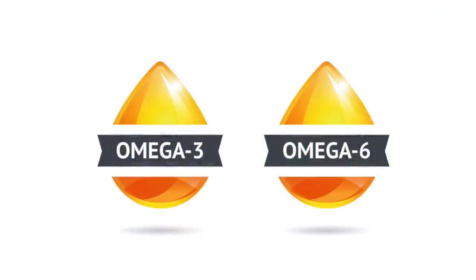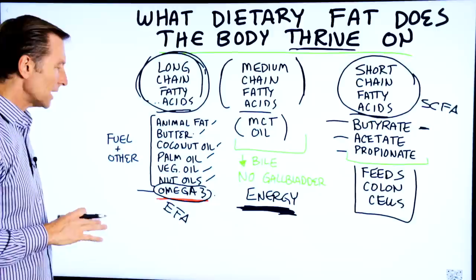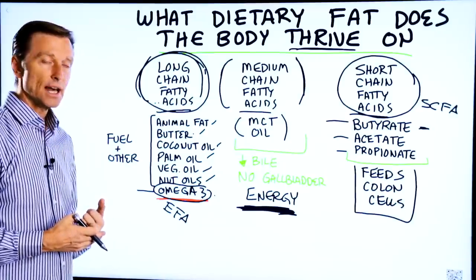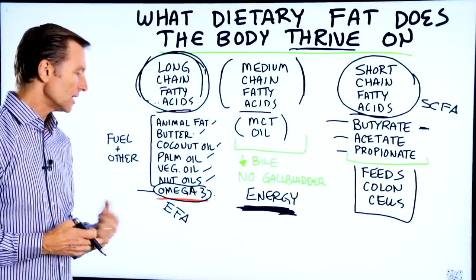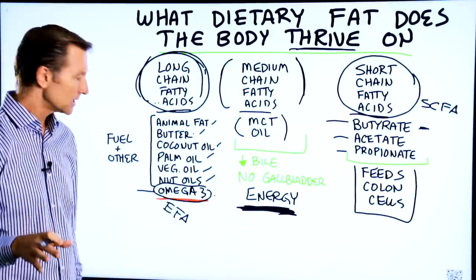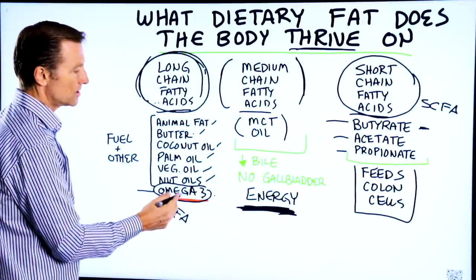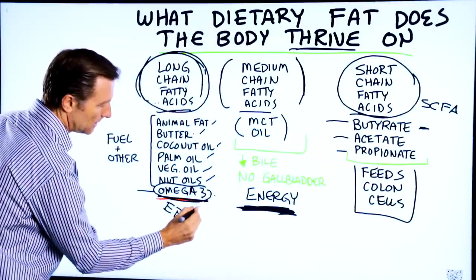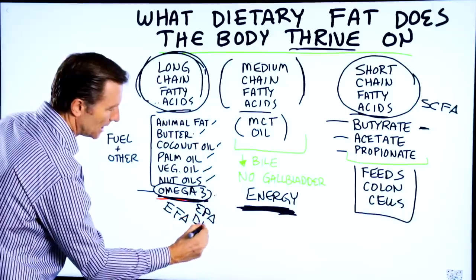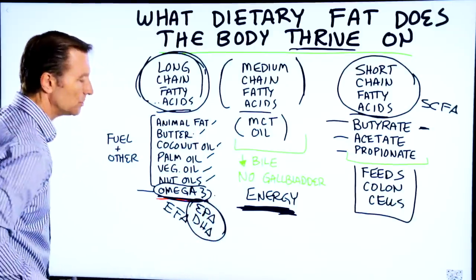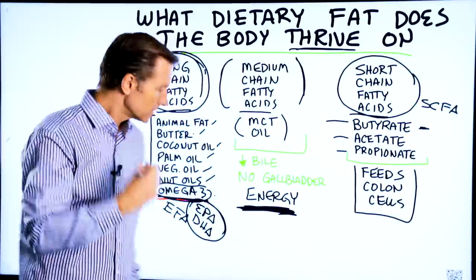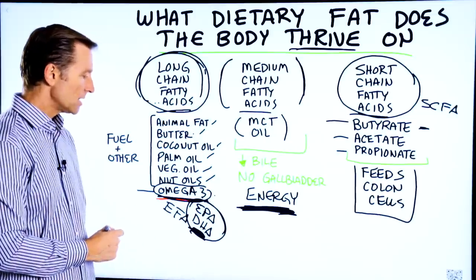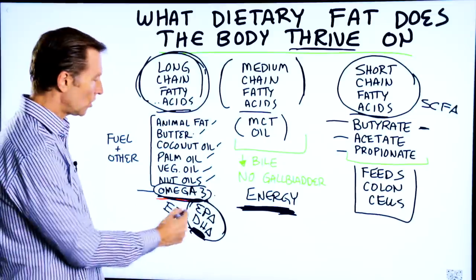The essential fatty acids are the omega fatty acids — omega-3 and omega-6. The amount of omega-6 we need is much less critical than omega-3, and I've done a video on that. The most important fat of all is omega-3, specifically EPA and DHA, because a good portion of your brain and retina depends on this type of fat. It's also anti-inflammatory, and the majority of the population is very, very low in it.